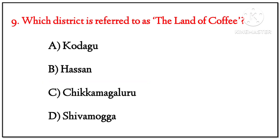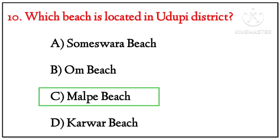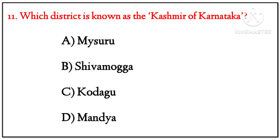Question 9: Which district is referred to as the land of coffee? The correct option is C — Chikkamagaluru. Question 10: Which beach is located in Udupi district? The correct option is C — Malpe Beach. Question 11: Which district is known as the Kashmir of Karnataka? The correct option is C — Kodagu.